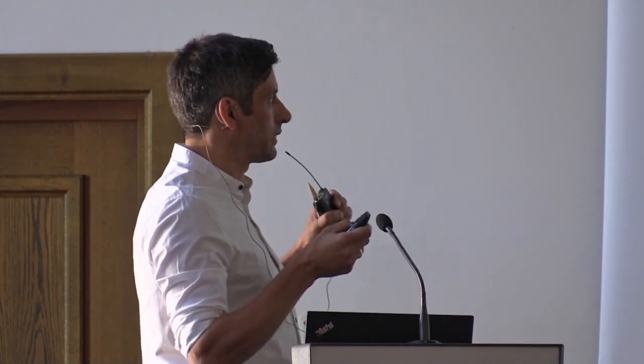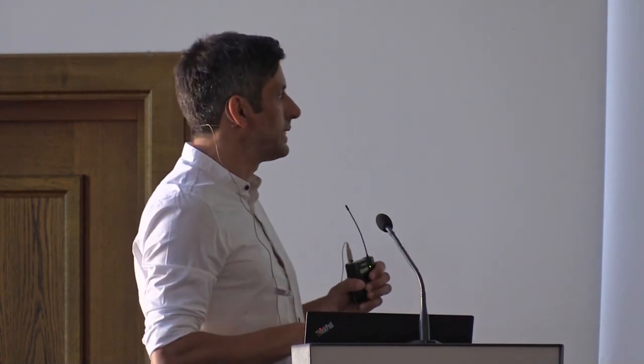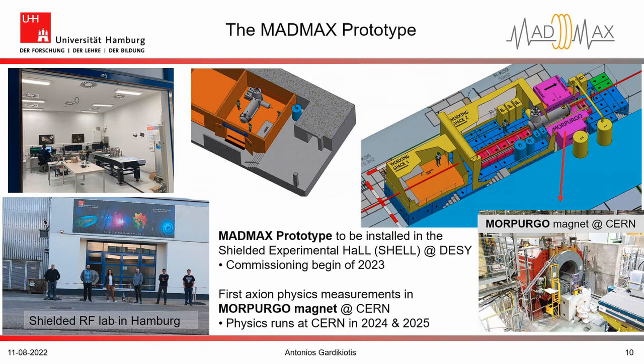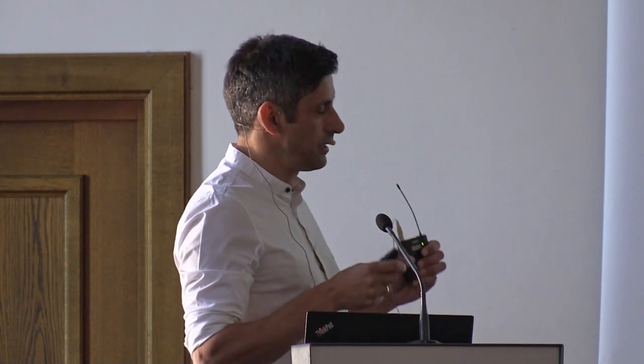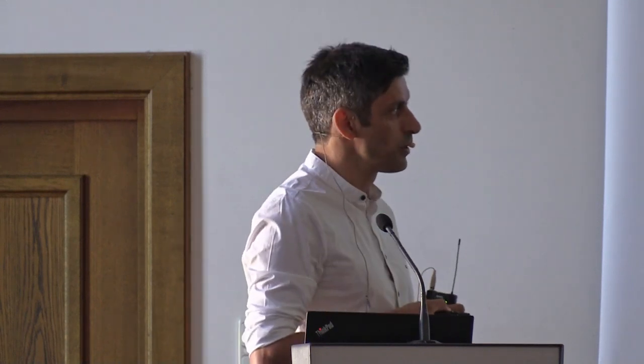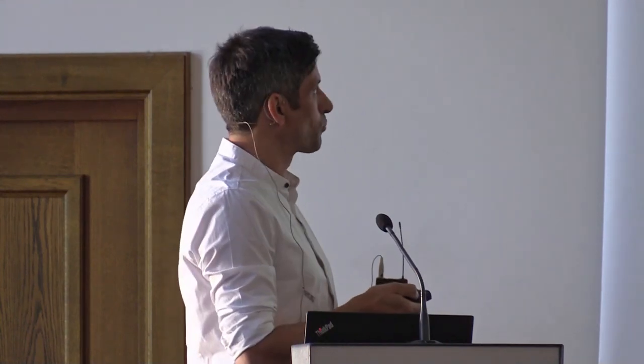The idea is to start by commissioning and installing the prototype cryostat inside the cylindrical experimental hole at DESY, then transport it to CERN to make use of the Morpugo magnet, because our own magnet of course needs a long time to be prepared. We can start physics runs at CERN in 2024 and 2025. Inside the Morpugo magnet at CERN — which has a quite open warm bore — we can place the MadMax prototype.